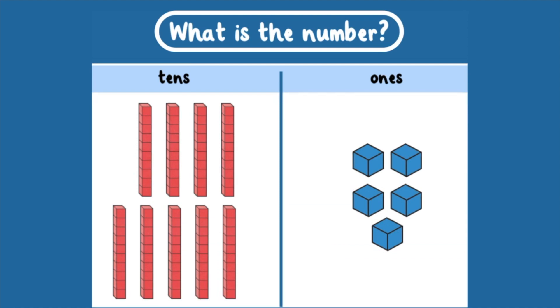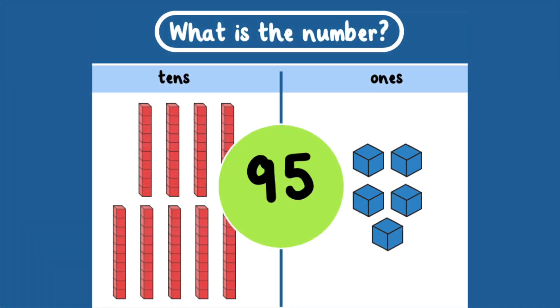What is the number? There are 9 tens and 5 ones. That equals 95.